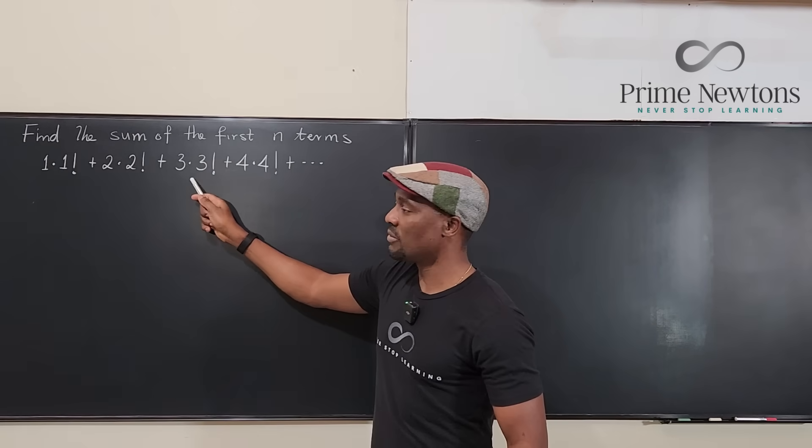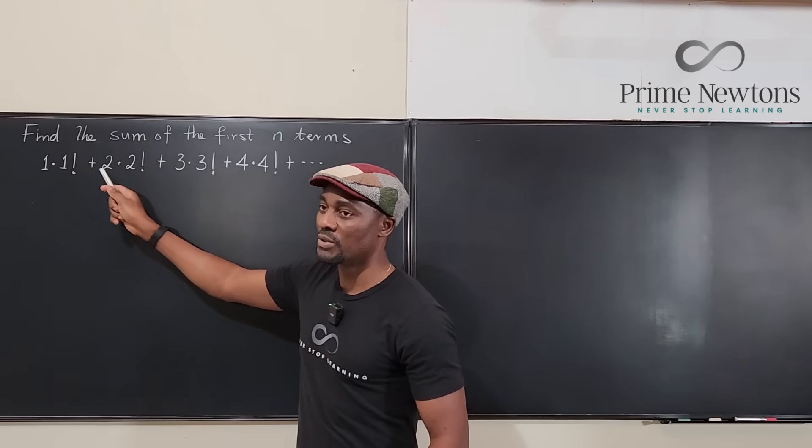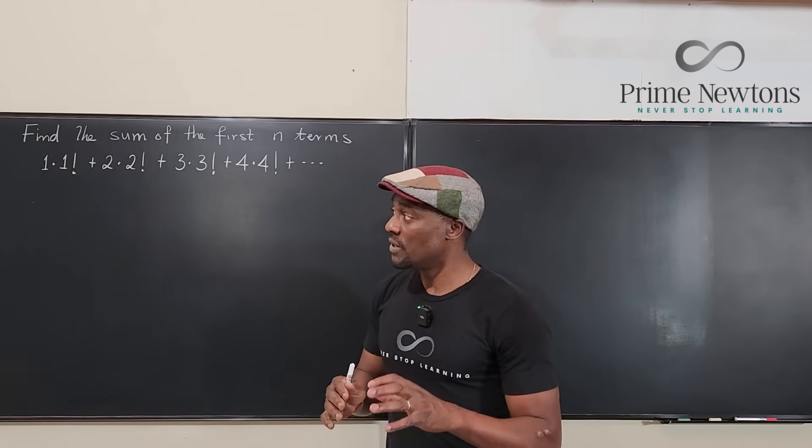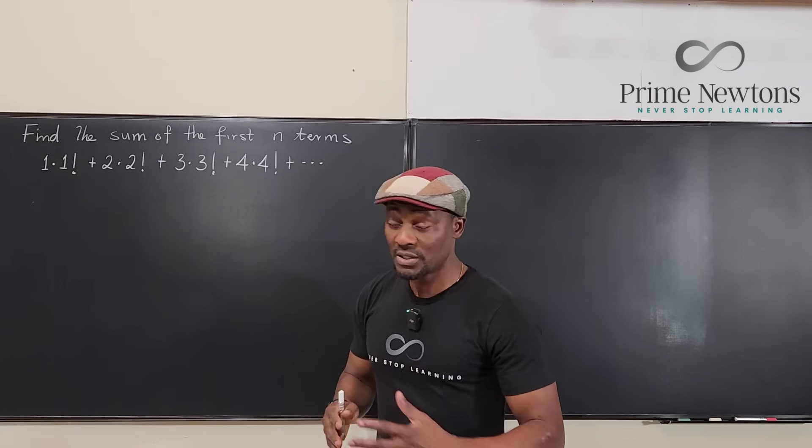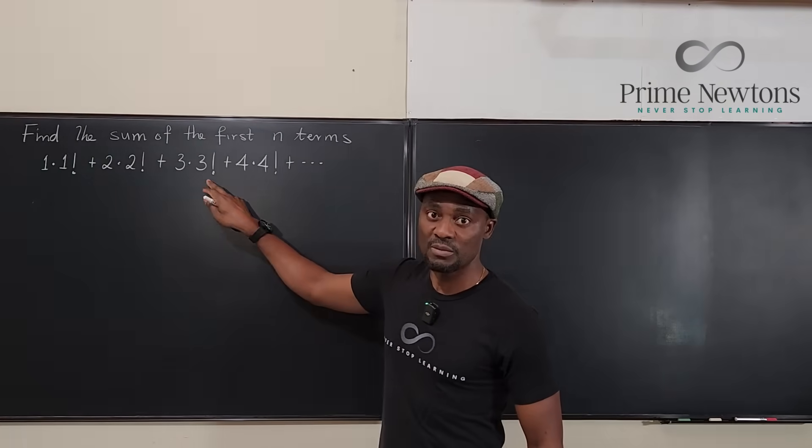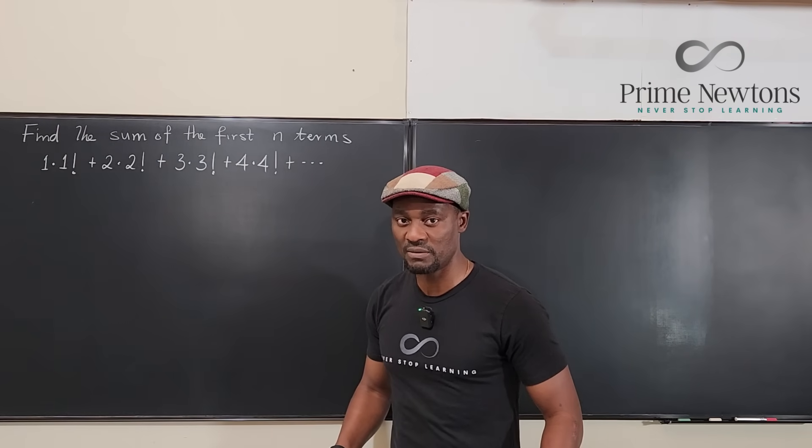And 3 times 3 factorial will be 3 times 6, which is going to be 18 plus 4 plus 1, which is going to be 23. So what we're saying is we're looking for a formula such that when we plug in 3, because we use the first three terms, if we plug in 3 into it, we're going to get 23.